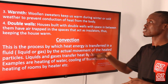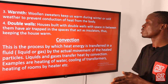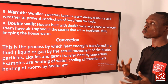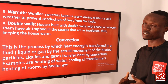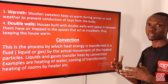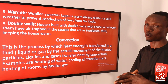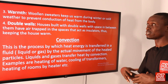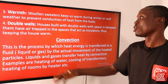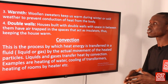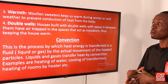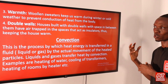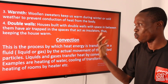Application three: woolen sweaters keep us warm during winter or cold weather by preventing conduction of heat from the body. The woolen sweater traps air between the fabric, and since air is a poor conductor of heat, this prevents heat flow from our body to the surroundings, keeping us warm. Application four: double walls — houses built with double walls have air trapped in the spaces between them, which acts as an insulator, keeping the house warm.